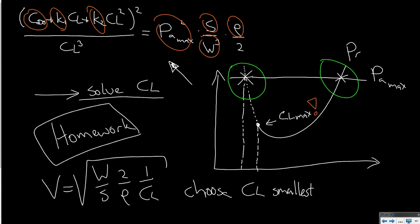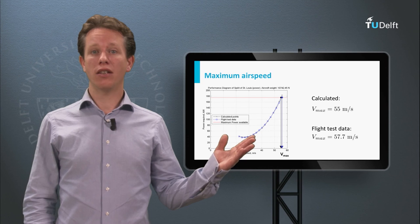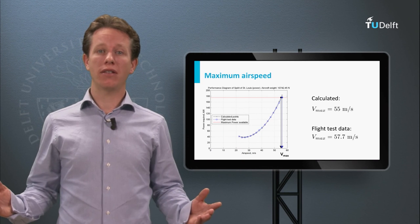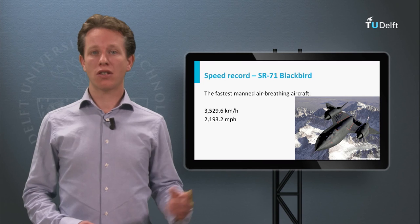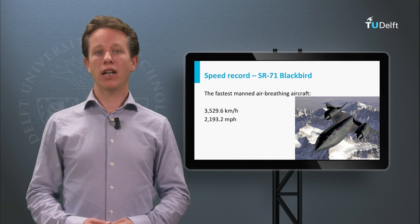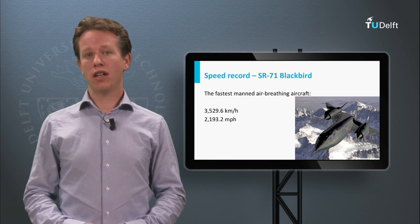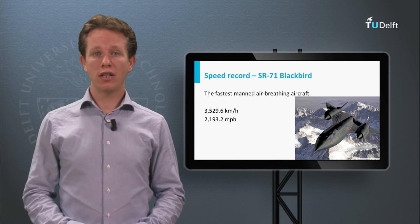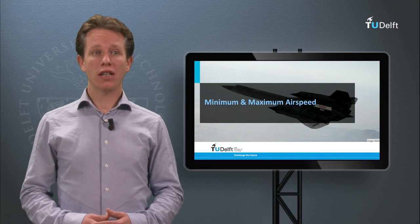One point of attention for a later lecture is that this second theoretical condition can actually become realistic when flying at very high altitudes — but that is for next week. I have just shown how to calculate maximum airspeed analytically for any aircraft, given its aerodynamic data and power available. A very specific aircraft famous for its speed is the SR-71 Blackbird. It holds the speed record for air-breathing manned aircraft, reaching a maximum speed of 3529.6 kilometers per hour — a pretty impressive number.